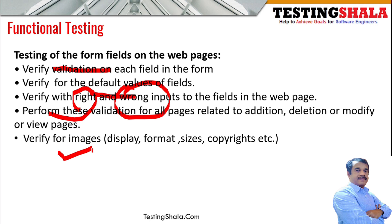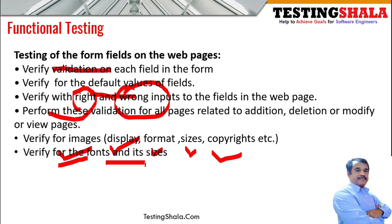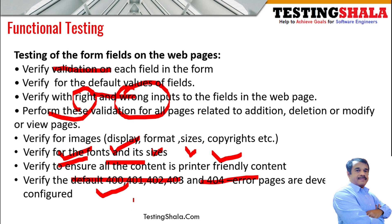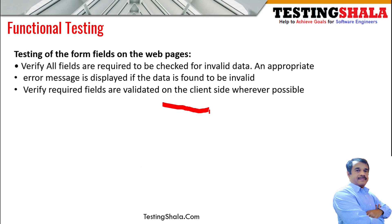We should ensure all images displayed on web pages have the right display format and size, and verify that no copyright images are uploaded. We should also ensure right fonts and font sizes are used. When clicking the print option in the browser, the content should appear in the right printable format. We should also ensure default error pages — such as 400, 401, 402, 403, and 404 error pages — are implemented and deployed on the web server.